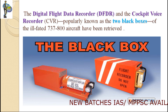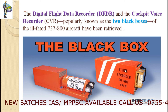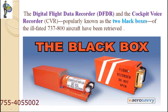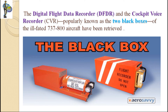The Flight Data Recorder records the aircraft performance parameters and flight performance data. It is orange in color and located at the tail side. The Cockpit Voice Recorder records the audio signals of the pilot and other audio signals inside the cockpit. The investigation now focuses on both the FDR and the CVR.